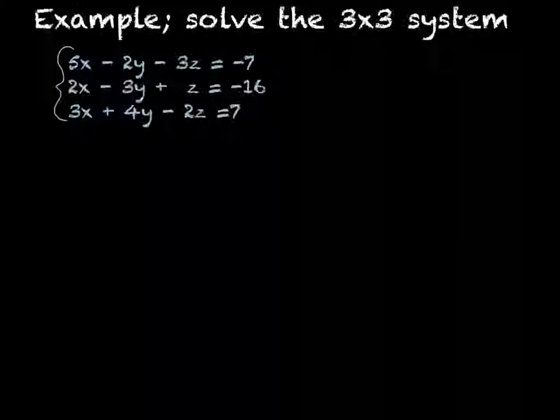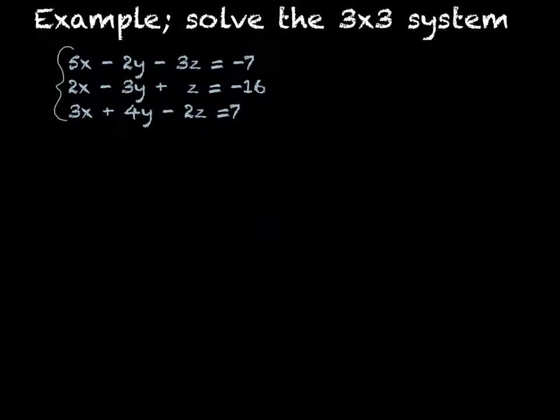Let's solve this system of 3x3 equations. We have: 5x minus 2y minus 3z equals negative 7; 2x minus 3y plus z equals negative 16; and 3x plus 4y minus 2z equals negative 16.